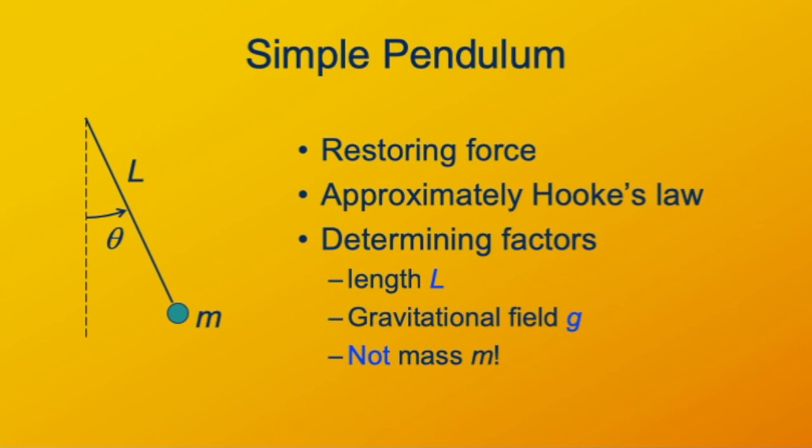The determining factors for the frequency and period of a pendulum's oscillation are merely the length, the distance from the hinge to the mass, and the strength of the gravitational field. It turns out that the mass doesn't matter. The reason the mass doesn't matter is the same reason that the mass does not matter for the acceleration of an object in the Earth's gravitational field. All objects fall at the same acceleration.